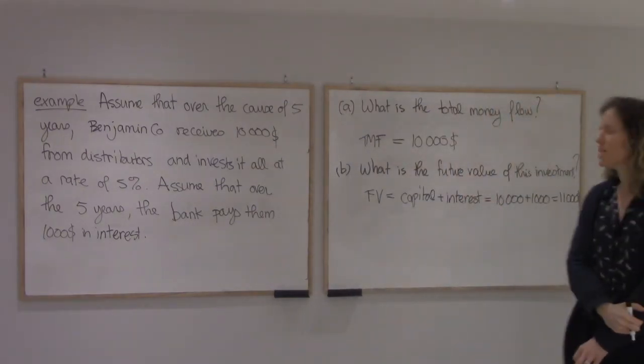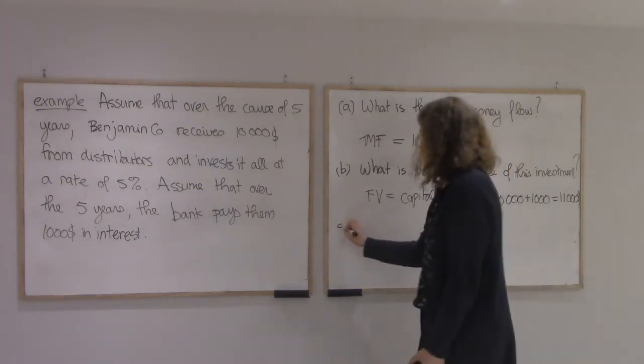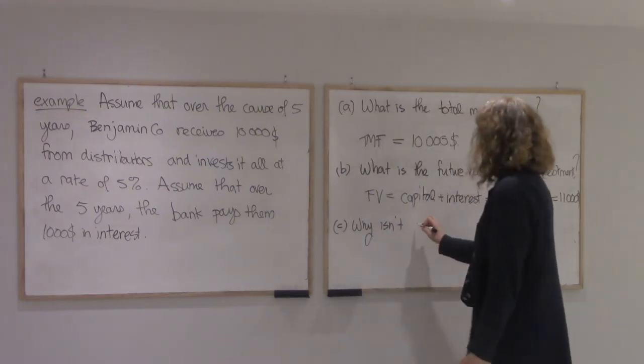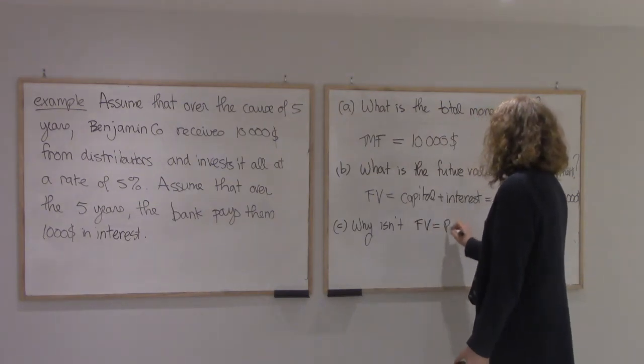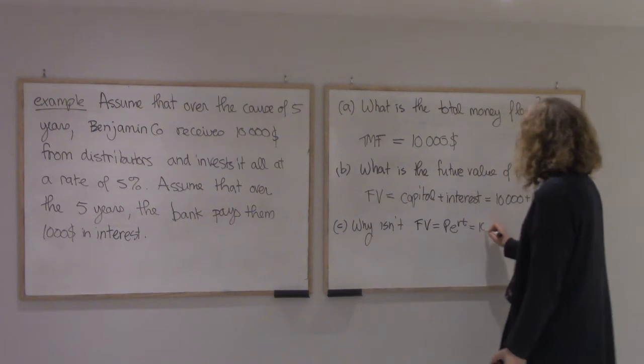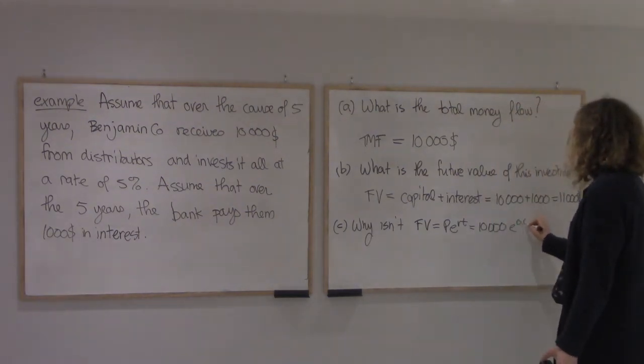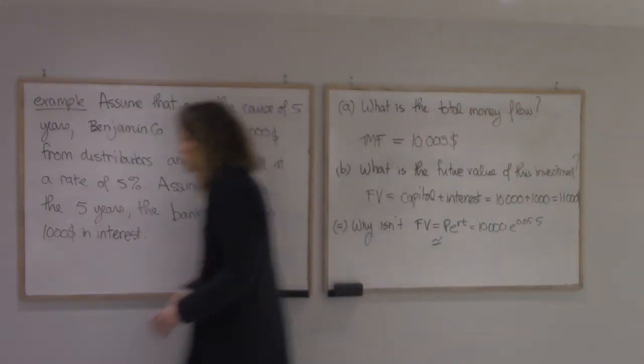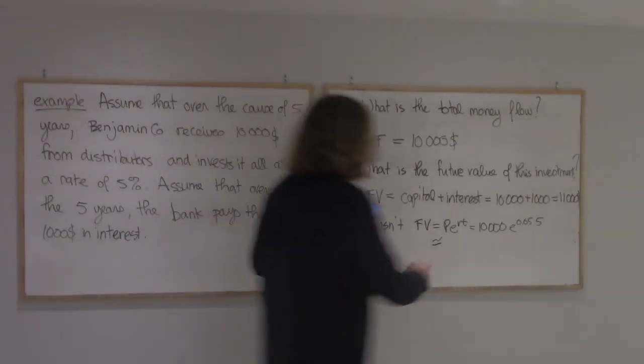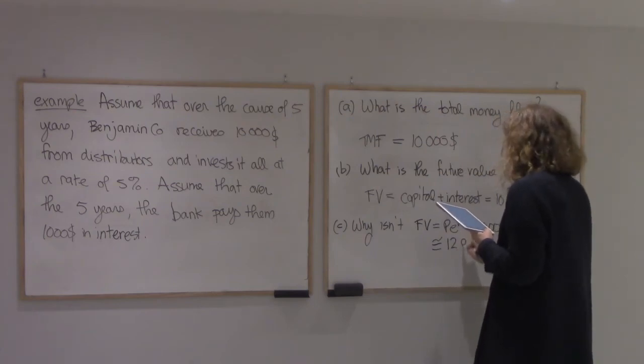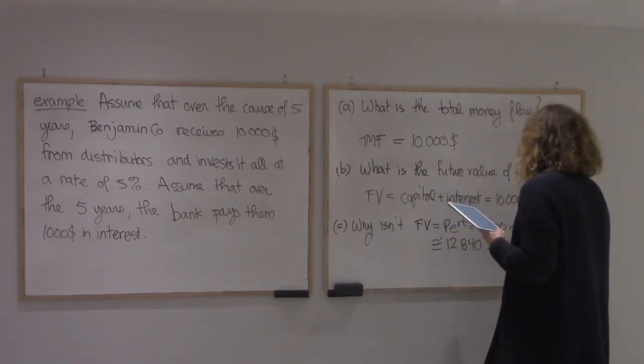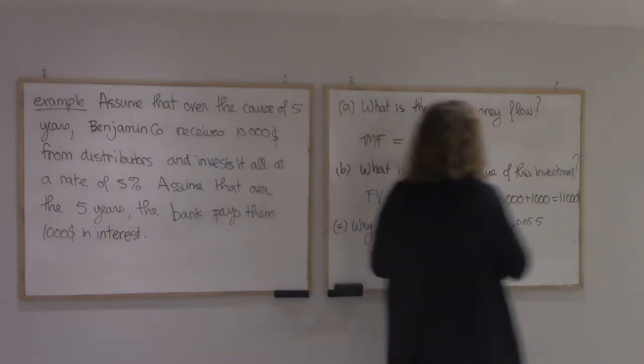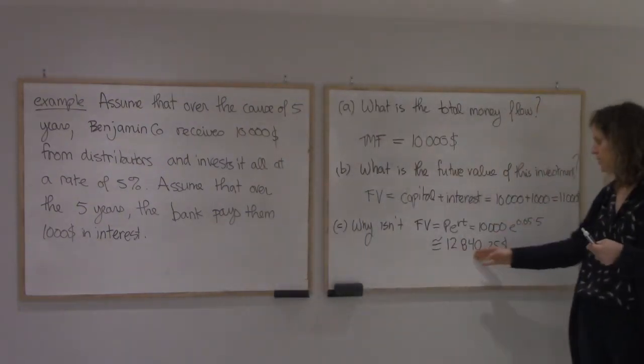Alright, so now what I want is I want to know why this isn't... So I want to know why this is $10,000 plus $1,000, and that equals $12,000. I computed it about $12,840.25. So is the bank robbing this company because they only gave them a thousand dollars in interest while over the course of five years they should earn $2,840?